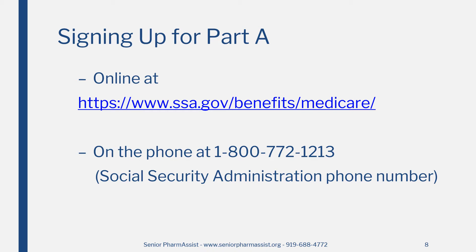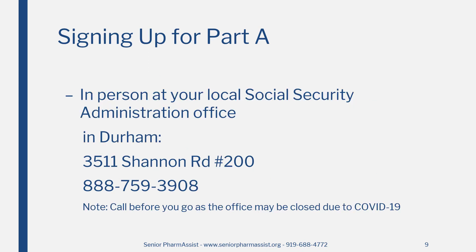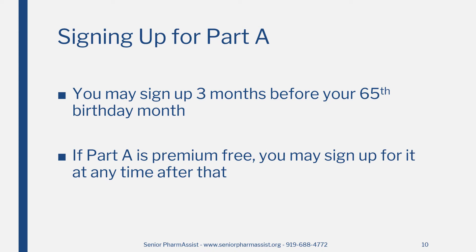You can enroll in Part A using one of the following methods: first, by going online using the link shown to connect to the Social Security website; or you can call Social Security at 1-800-772-1213. Another way to enroll in Part A is to go to your local Social Security office. If you choose to go to the local Social Security office in Durham, I suggest you call to make an appointment ahead of time to avoid a long wait.